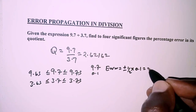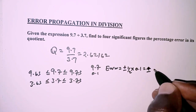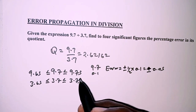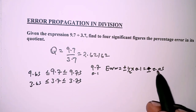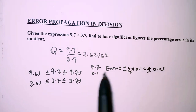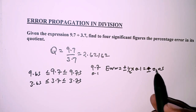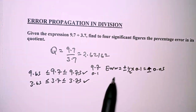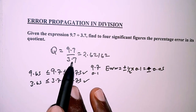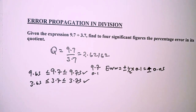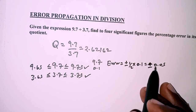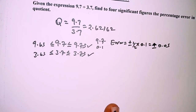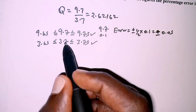The error in that measurement is obtained as plus or minus half the least unit of measurement, which is 0.1, giving plus or minus 0.05. To get the upper limit we add 0.05 to 9.7, and for the lower limit we subtract 0.05 from 9.7. The same applies to 3.7, since it is also expressed to one decimal place.